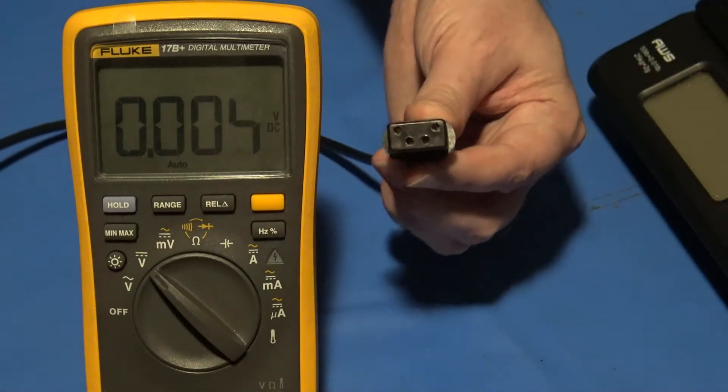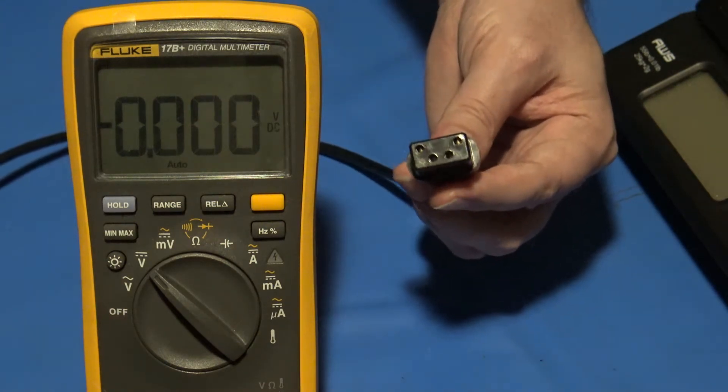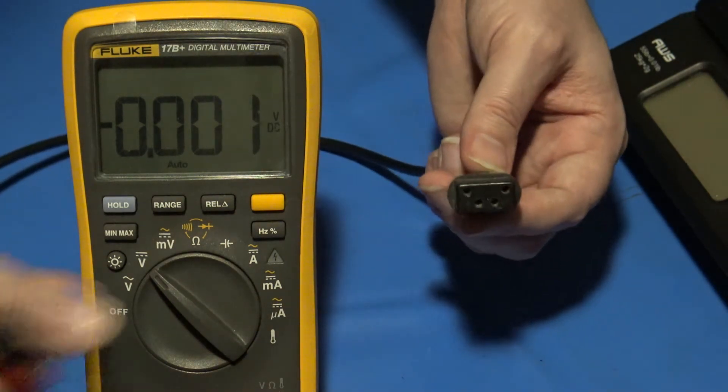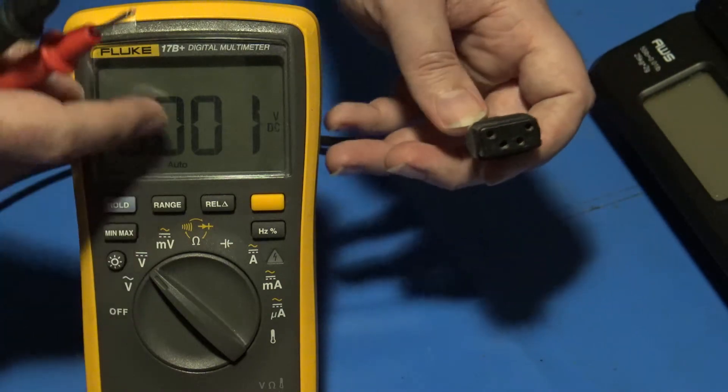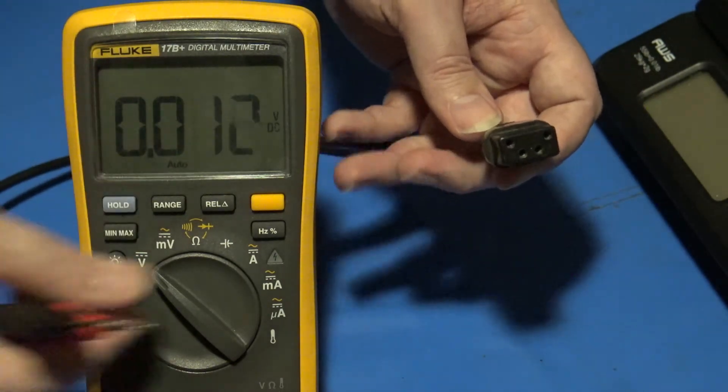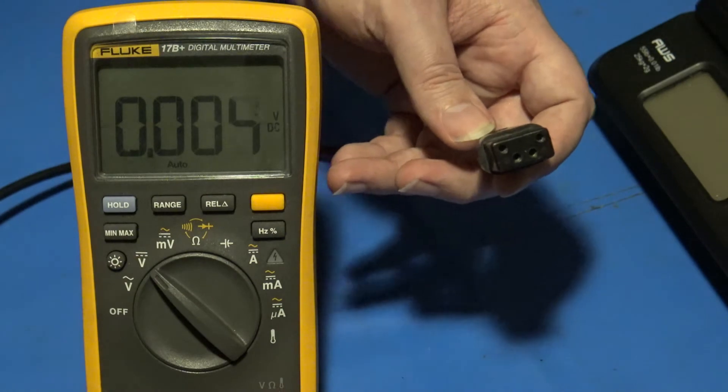And of course, we have to have the ColecoVision power cord itself. I do have it plugged into my AC outlet. Turn your multimeter to the DC reading range right here, just where I've got mine sitting right now.